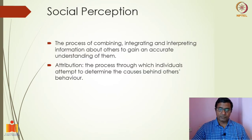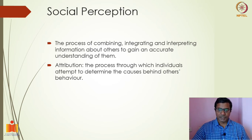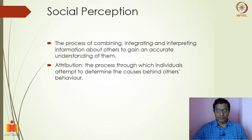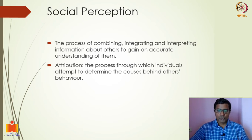In the previous section, we looked at social perception. Social perception means perception in a social context or perception using social information. There are a lot of theories and concepts related to social perception, but we are going to look at only two major areas: one, how do we perceive others or understand others, and two, how do we understand our own behavior or attribute cause to behavior.